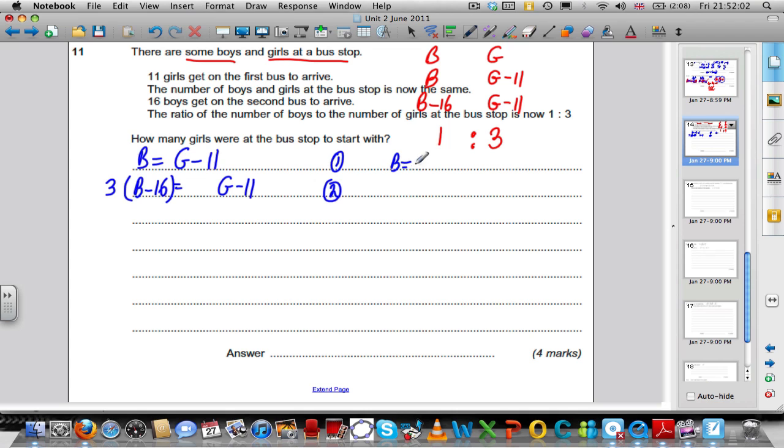We can also say at the end of it that the number of boys and the number of girls are in the ratio 1 to 3. So, the boys at the very end is B subtract 16 and the number of girls is G minus 11. And we know that there are 3 times as many girls as there are boys. So, we have to multiply the number of boys by 3 to get how many girls there are. This is equation 1 and this is equation 2.